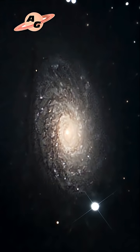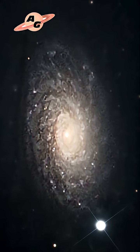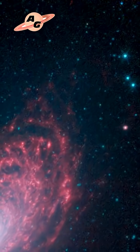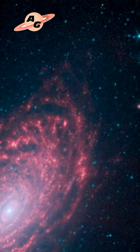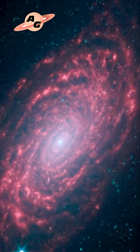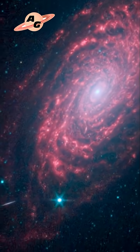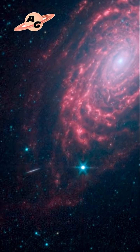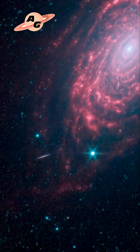This galaxy was discovered on June 14, 1779, by the French astronomer Pierre Méchain. In the mid-19th century, the Irish-English astronomer William Parsons, also known as Lord Rosse, was able to discern a spiral structure in the Sunflower Galaxy.